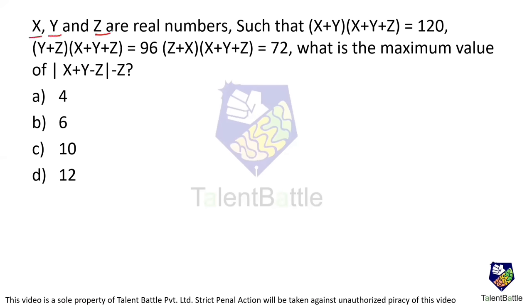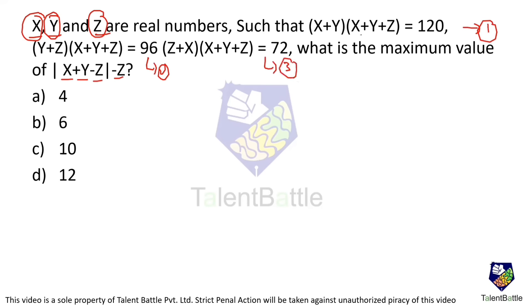Next problem: x, y, z are real numbers such that (x+y)(x+y+z) = 120, (y+z)(x+y+z) = 96, and (z+x)(x+y+z) = 72. Find the maximum value of |x + y - z|. Label these equations 1, 2, and 3, then add all three together — x+y+z is a common factor throughout.